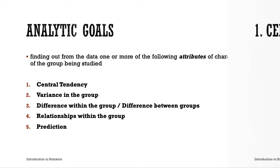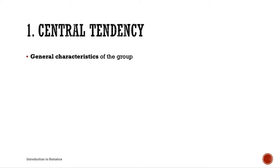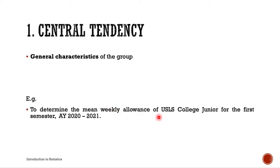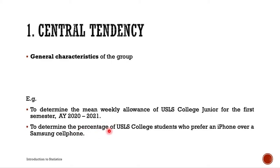Let's start with central tendency, which talks about the general characteristics of the group. For example: to determine the mean weekly allowance of USLS college juniors for the first semester of academic year 2020–2021. Another example is to determine the percentage of USLS college students who prefer an iPhone over a Samsung cell phone. Both of these involve central tendency.